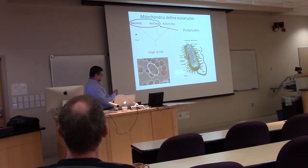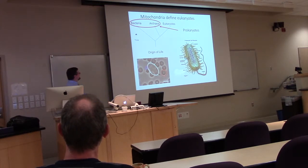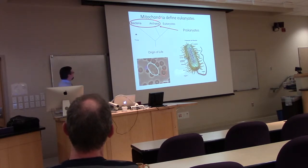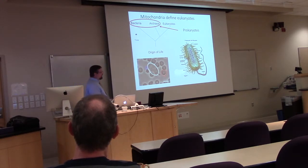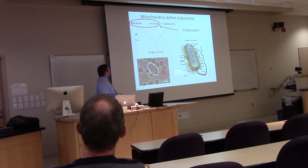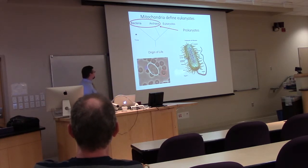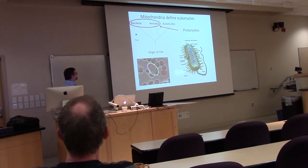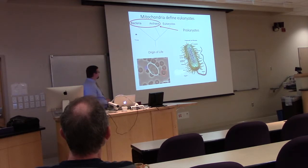Bacteria and archaea are also known as prokaryotes. They make up an incredibly diverse array of life on planet Earth that is necessary for us eukaryotes to survive, but they're generally much more simple in organization and structure, and usually much smaller.